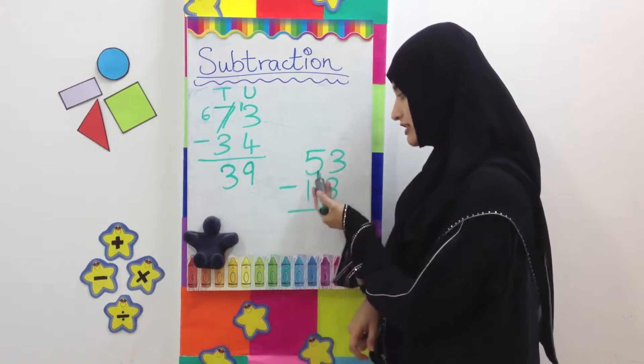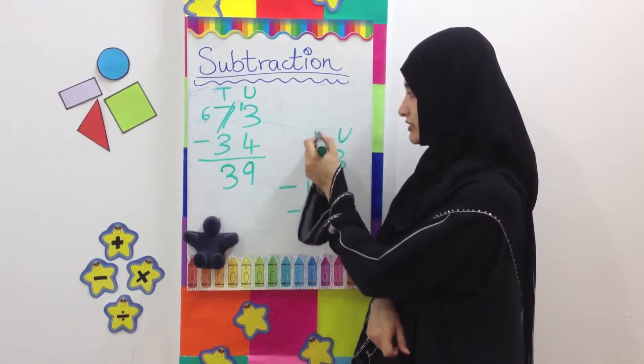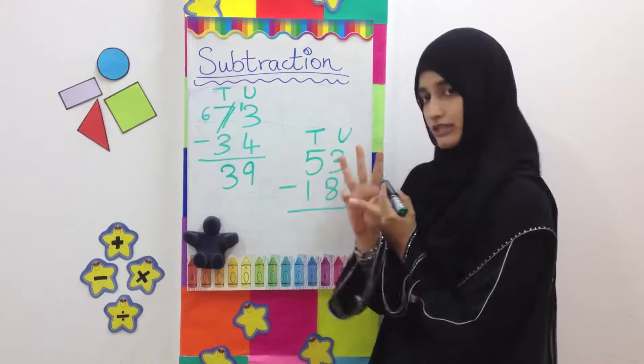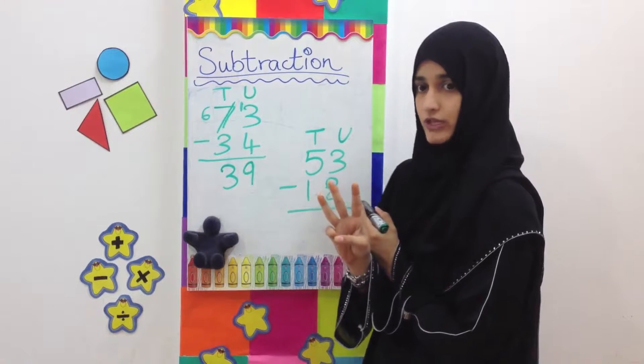The next question here is 53 minus 18. We write the units and the tens on the top and start working on the unit side. We have 3. We have 3 units but we have to take away 8. Which is not possible. So we borrow.